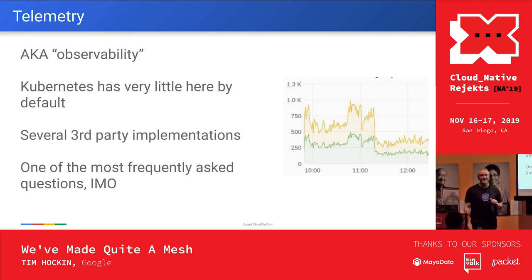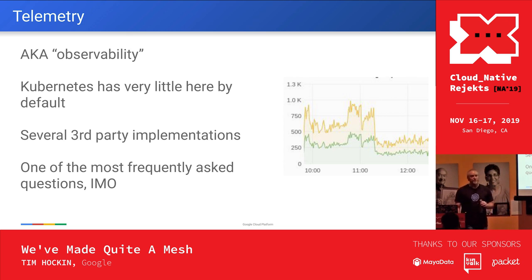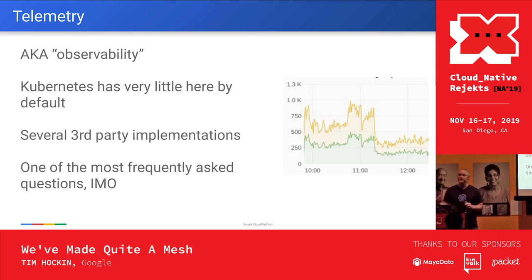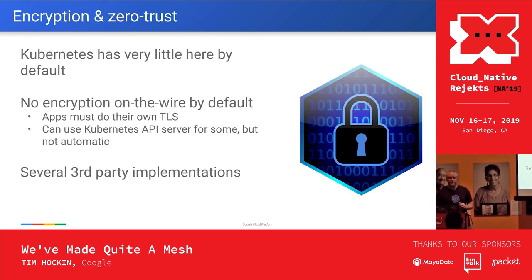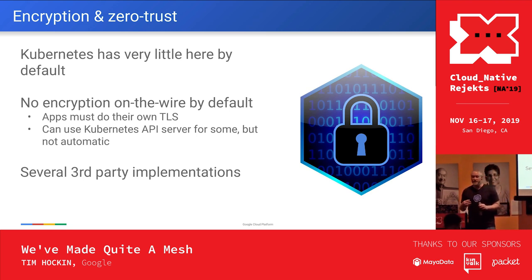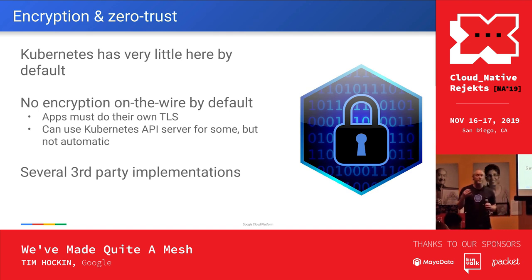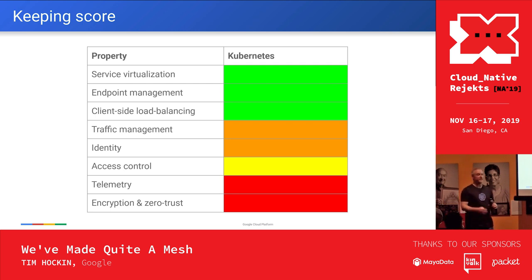Telemetry and observability: Kubernetes has almost nothing here by default. Out of the box, there's almost nothing. There are third-party implementations of network telemetry that trap in at the networking layer and give more visibility, but honestly we're not doing well here. One of the most frequently asked-for things from customers is more information about what's going on at the service level. Encryption — similar story, not a whole lot there for Kubernetes out of the box. Some networking implementations offer IPsec or other mechanisms for getting encryption on the wire, but it's not built in.